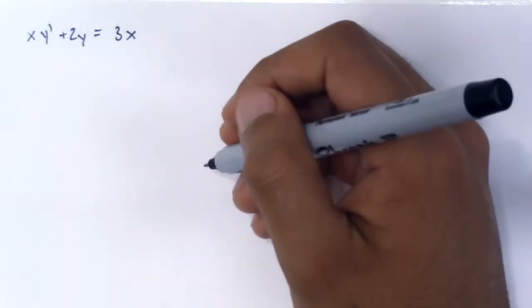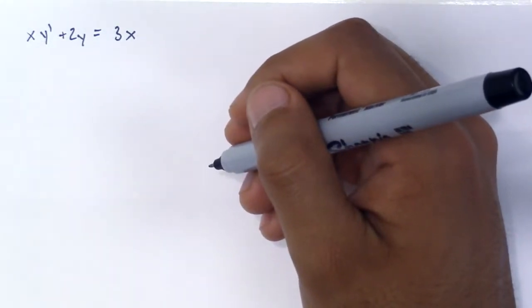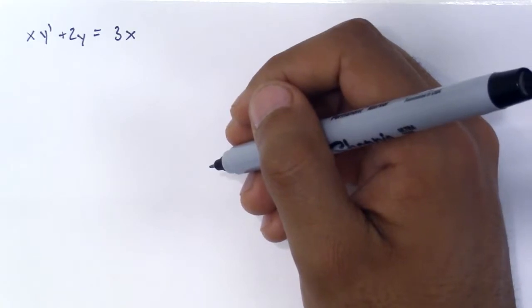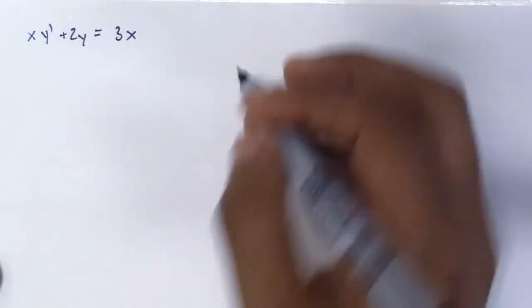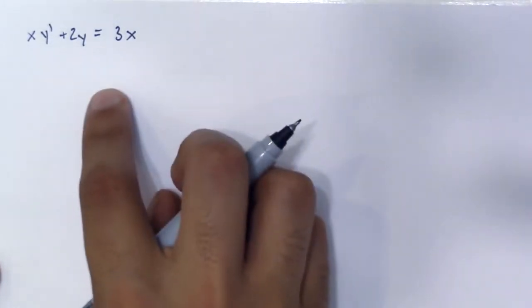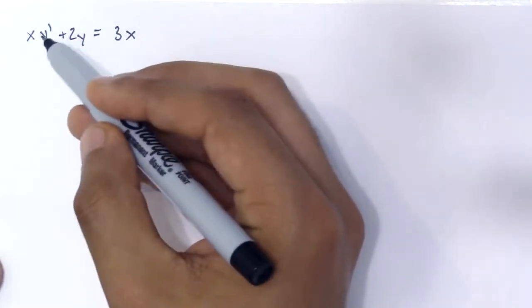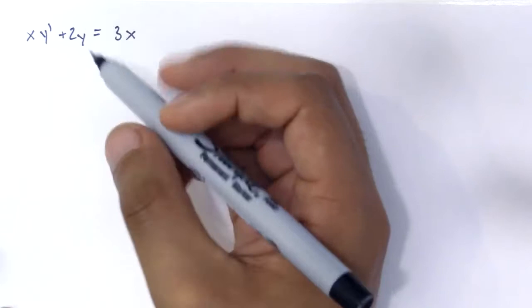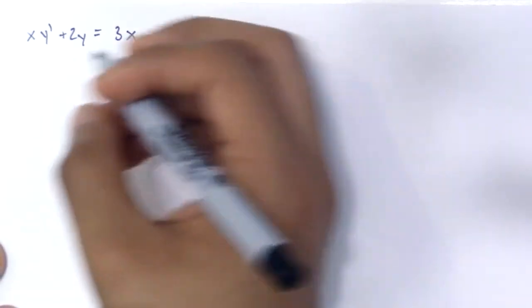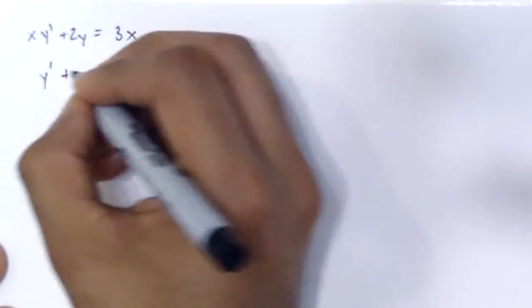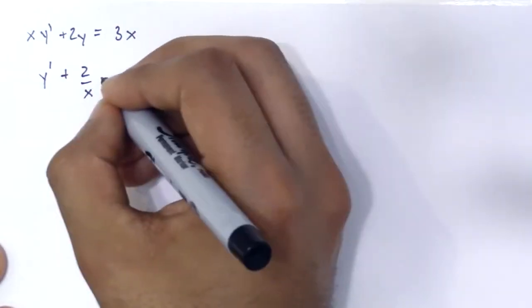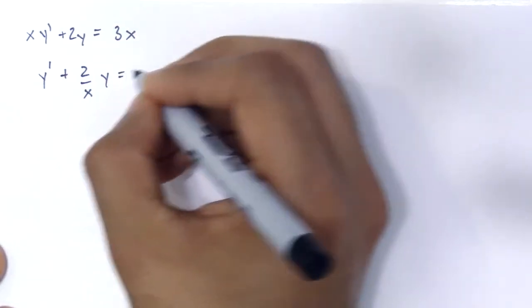For this differential equation we're using an integrating factor. For any differential equation, if you have something that looks like this, always get rid of anything that's in front of the y prime or the highest order. And to do that we're going to divide by x of everything. So we're going to get y prime plus 2 over x times y which equals 3.